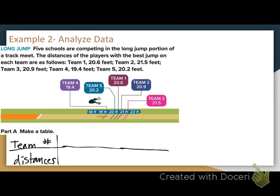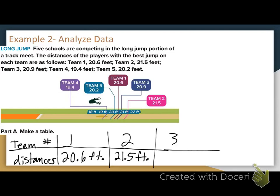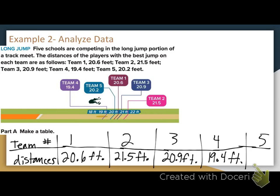Team 1 jumped 20.6 feet. Team 2 jumped 21.5 feet. Team 3 jumped 20.9 feet. And lastly, Team 5 jumped 20.2 feet.